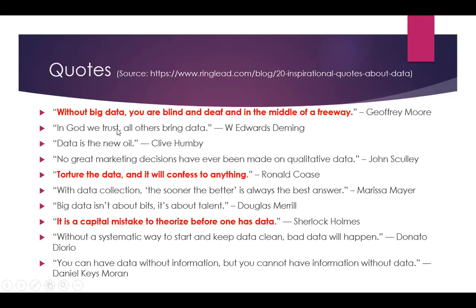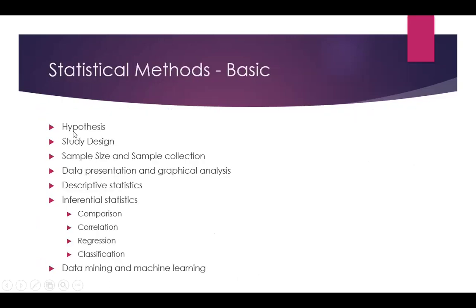So what are the statistical methods? First of all, there is hypothesis. Hypothesis is our belief of what is true — it is not proven yet. Once it has been proved, it becomes a thesis. First there is hypothesis, and to prove this hypothesis, we formulate a study design. We calculate the sample size, and we then collect the sample or we collect the data. That data is classified and represented in the form of graphs and pictures, and we do analysis.